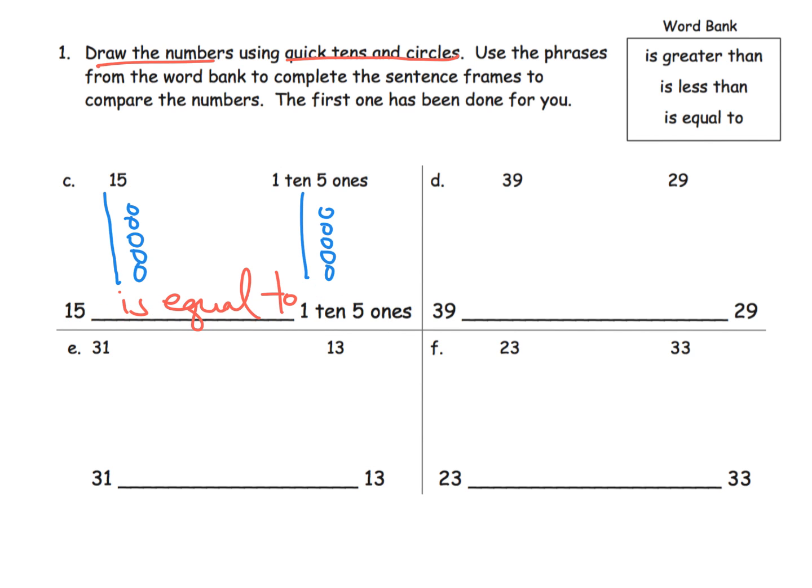Let's go down to f, so we've got 23 and 33. So 23, quick tens, two quick tens and three ones. So we've got two tens and three ones. For 33 we're going to have three tens and three ones.